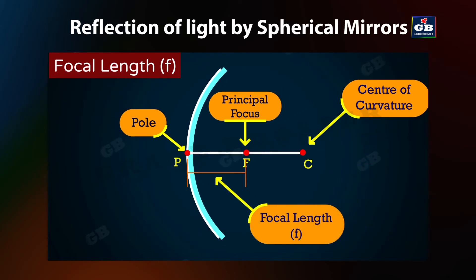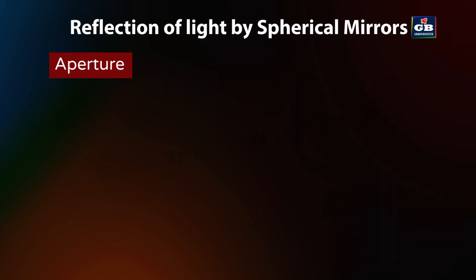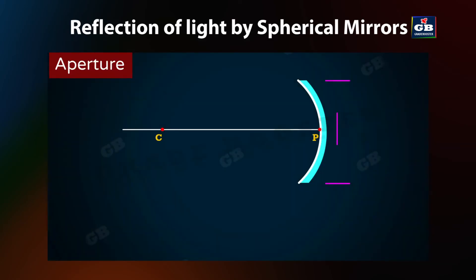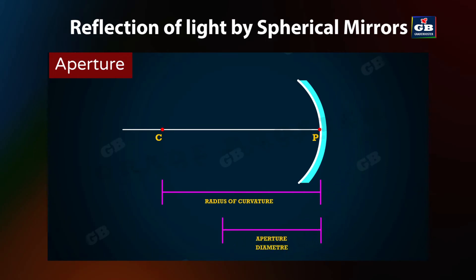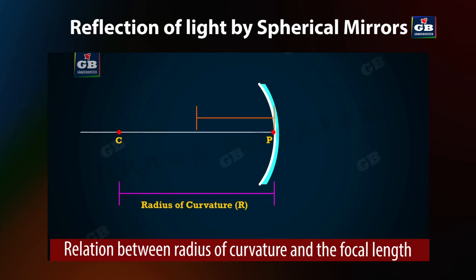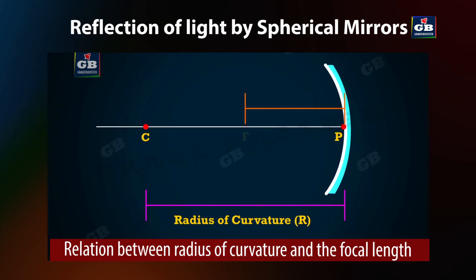Focal length: the distance between the pole and the principal focus of a spherical mirror is called the focal length, represented by the letter f. Aperture: the diameter of the reflecting surface of the spherical mirror is called its aperture. In this chapter we are discussing spherical mirrors whose aperture is smaller than their radius of curvature.